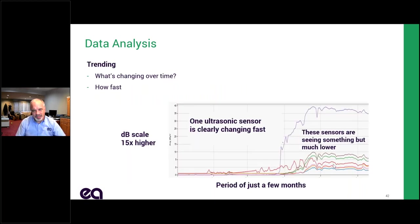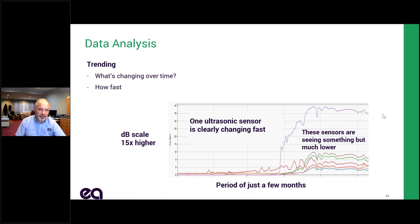Here's trending from a real system in the UK with a whole bunch of ultrasonic sensors. Over a timescale of a few months, one sensor went up dramatically while all the others stayed much lower. Clearly something changed in that cabinet. The monitor doesn't tell me it's going to fail next Tuesday at 11:42 AM, but it tells me I've got a problem. This is a logarithmic scale — the purple line is 15 times higher than the lines below. That tells me something is seriously wrong.